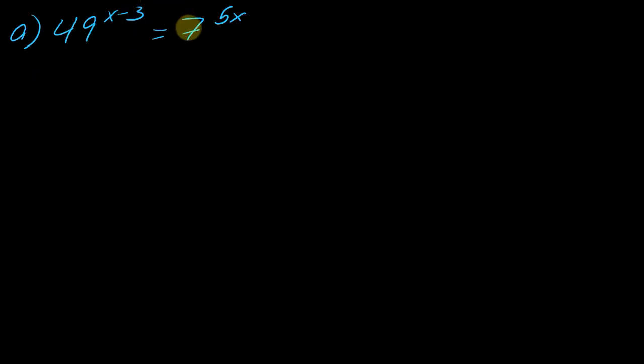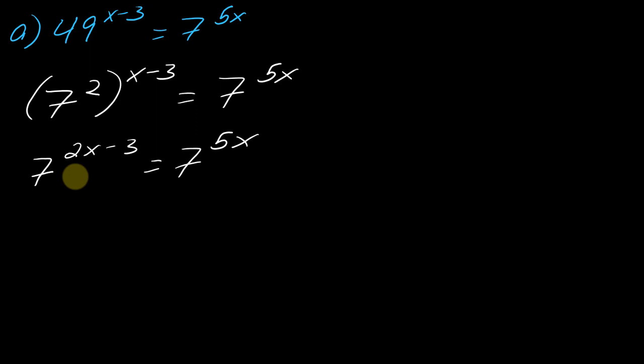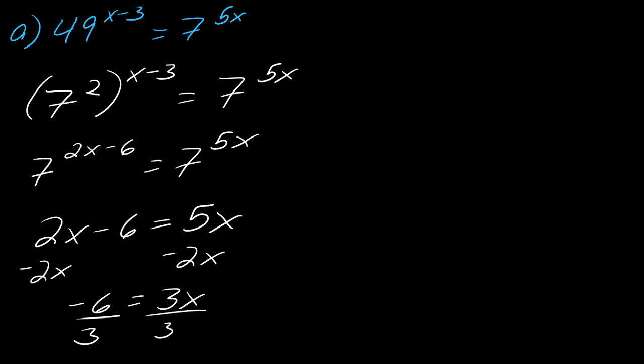Starting with this first example, notice that 7 to the 5x, you can't really rewrite this, but 49 can be rewritten as 7 squared. So that's really what you're looking to do. The other exponent is just coming along for the ride. So I've got 7 squared to the x minus 3 equals 7 to the 5x. Now I can use my rules of exponents. This side will become 2x minus—actually, that would be 2x minus 6, my bad. Now I can pluck out the exponents and take 2x minus 6 equals 5x. Subtract the 2x from each side, so I get negative 6 equals 3x. Divide each side by 3, and you get x equals negative 2.